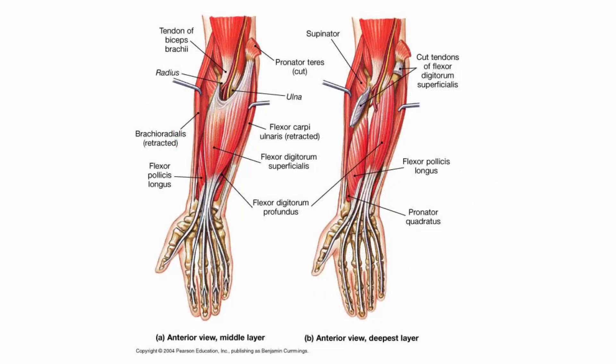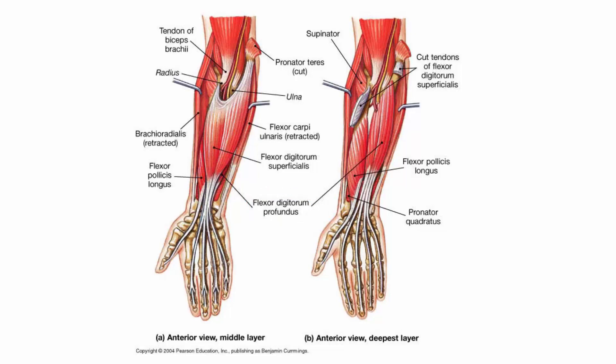Going a bit deeper, we have the flexor digitorum superficialis, which flexes the wrist and digits. Underneath that is the flexor digitorum profundus — profundus means deep, so this is your most deep flexor muscle, and it also flexes the wrist and fingers. Notice that the flexor digitorum superficialis stops a bit shorter and splits, while the flexor digitorum profundus continues through that split all the way to the tips of the fingers.